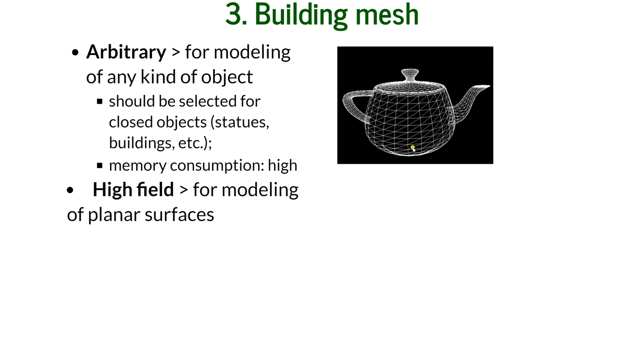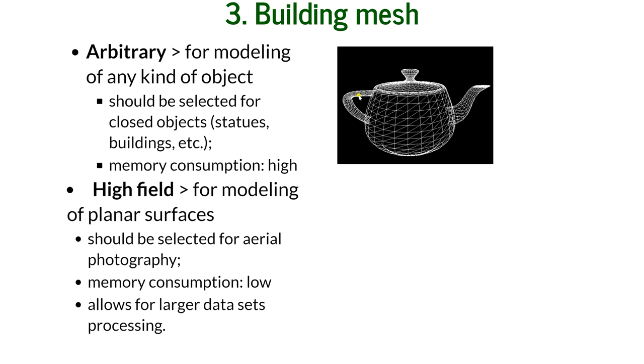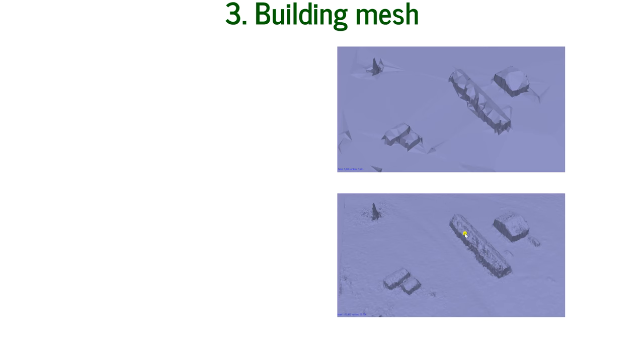What we're going to be using is the mode for planar surfaces, called high field. It should be selected for aerial photography. It has low memory consumption and just doesn't take into account those spots that are underneath the objects. It's called a 2.5D mesh, which allows for larger data set processing. You can see here how we created this mesh. It doesn't contain what's below, so it shows the tree as a tower.